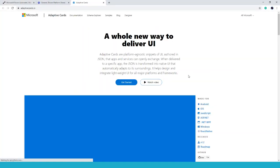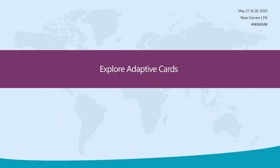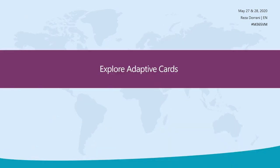The key question is: why should I learn JSON and a new schema definition language? Is there any help available to build these adaptive cards? The answer is yes — adaptivecards.io. If you've never checked it out, I highly recommend you do so.